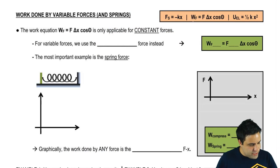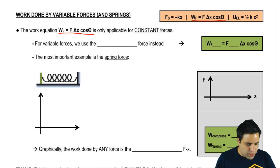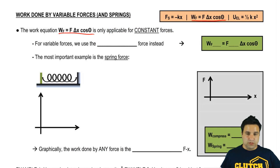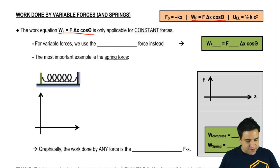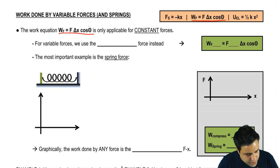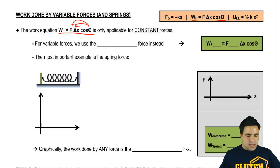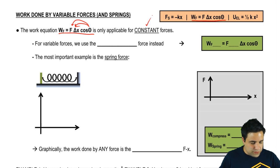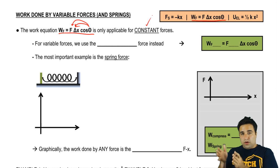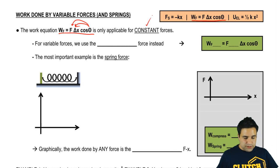The work equation: the work done by a force equals force times displacement times the cosine of theta, where theta is the angle between F and delta x. Remember, this is applicable only if you have constant forces. So everything we've had so far were constant forces.